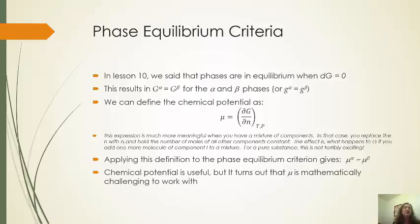So that means that the Gibbs energy in those two phases, the alpha and beta phase, will be equal to each other. And this can be for the total Gibbs energy or a specific Gibbs energy.